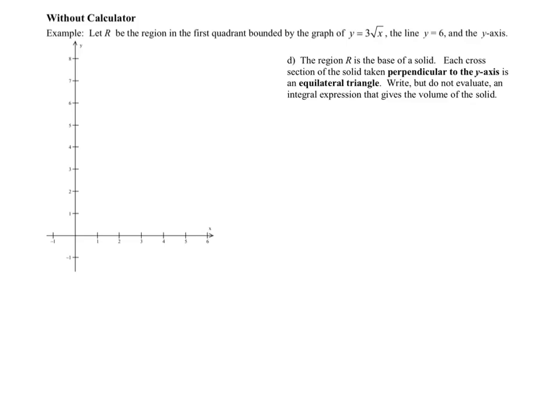As we start the next example, note we are not allowed to use a calculator. Many of you groaned when you saw that the slices are perpendicular to the y-axis, which means everything needs to be in terms of y. The region is bounded by y = 3√x and y = 6, intersecting at x = 4. We draw horizontal slices perpendicular to the y-axis.